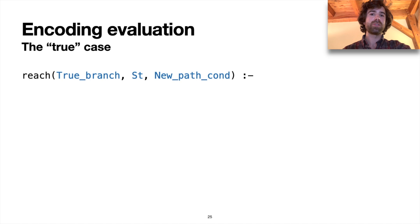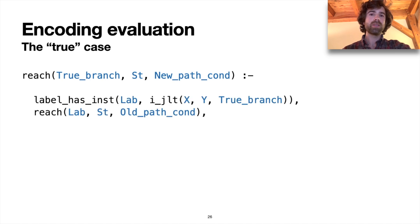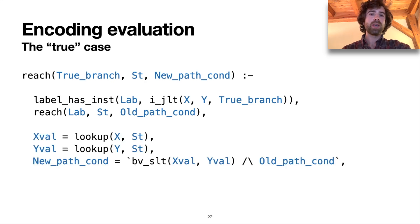We're saying that the true label is reachable with some store and some new path condition. When we've reached a label that has a conditional jump, we can look up the values for the variables that are being compared at that conditional jump, and then encode a new path condition, which is that comparison conjoined with the old path condition. And this new path condition is satisfiable. This satisfiability check is important for ensuring that we don't explore parts of the graph that aren't reachable.